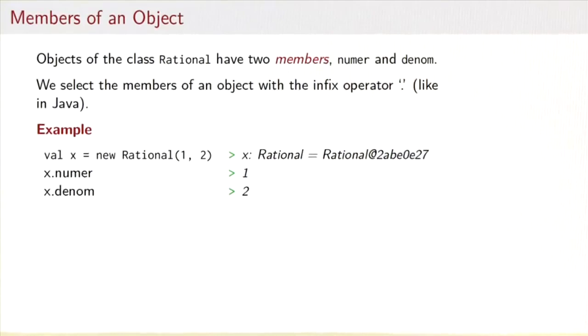So you see that objects of class Rational have now two members called numer and denom, and that the members are selected just like in Java with an infix dot between the object name and the member name.